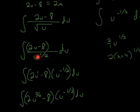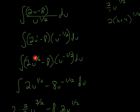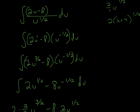We move u to the 1/2 power from the denominator to the numerator, so it becomes u to the negative 1/2. Since 2x is 2u to the 1st power, we can write that as u to the power of 2/2. Now we multiply across. When you multiply exponents it's the same as adding them, so 2/2 plus negative 1/2 equals 1/2.